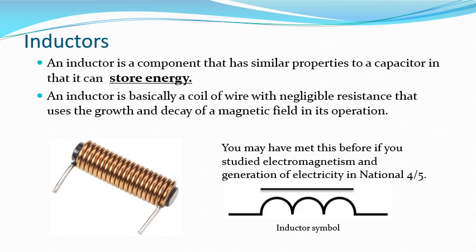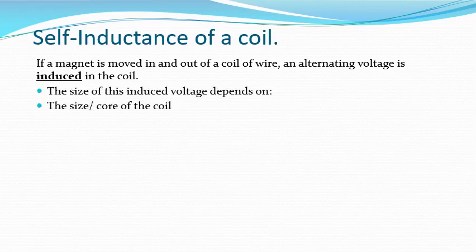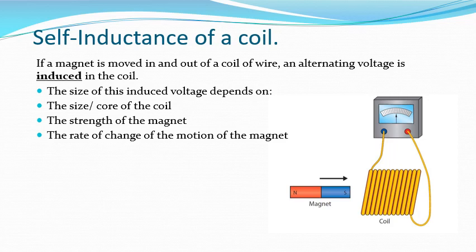When we looked at electromagnetism and generation of electricity — touched on in National 5, more in National 4 and S3 — we were talking about induction and inductors. We had a coil of wire and a magnet, and if we got relative motion between the coil and the magnet we could induce a voltage within the coil. This is how dynamos or generators work. Moving the magnet faster gives a greater induced current or voltage, a greater number of turns gives a greater induced voltage, and a stronger magnet also gives a greater voltage.